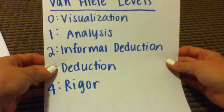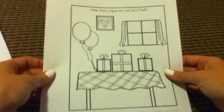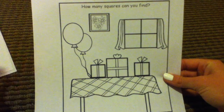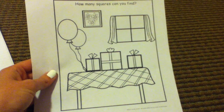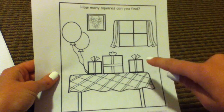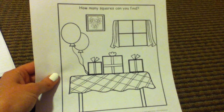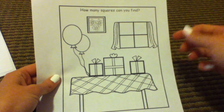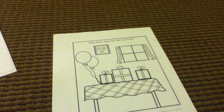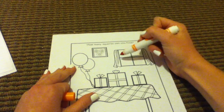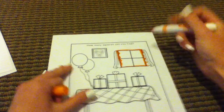The first supporting activity is for level zero visualization, which is appropriate for kindergarten or first grade. I have a worksheet that asks 'how many squares can you find?' This is good for level zero because students are describing what shapes look like — for example, 'a square looks like this' — and they might draw it with their finger or say 'a square looks like a window.' I would have them outline the shape with a color to show they found it.